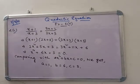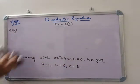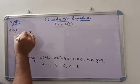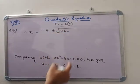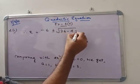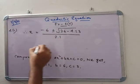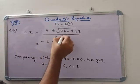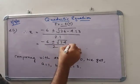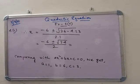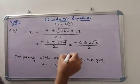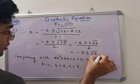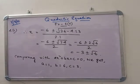By Sridharacharya's formula, x equals minus b plus or minus root of (b squared minus 4ac) over 2a, which gives minus 6 plus or minus root of (36 minus 12) over 2, that is minus 6 plus or minus root 24 over 2. Since root 24 equals 2 root 6, we get minus 6 plus or minus 2 root 6 over 2, which simplifies to x equals minus 3 plus or minus root 6.